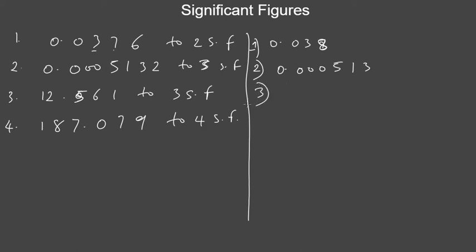For 12.561 to three significant figures, count from the left: one, two, three — giving 1, 2, 5. Check the next number, which is 6. Since 6 is more than 5, we increase the 5 by one, making it 6. Remove the rest of the digits. The answer is 12.6. Note: once you start counting, you don't skip zeros — even zeros are included once counting has begun.